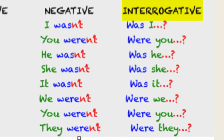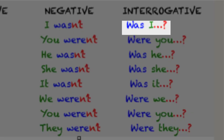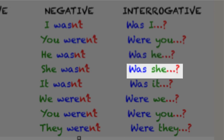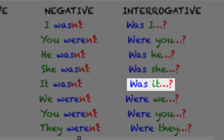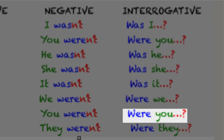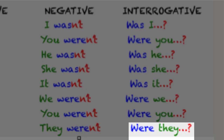Interrogative: Was I? Were you? Was he? Was she? Was it? Were we? Were you? Were they?